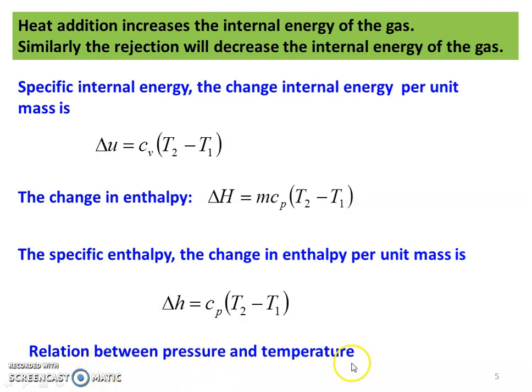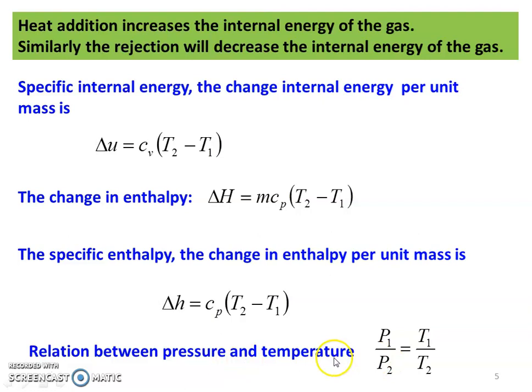The relation between pressure and temperature for the constant volume process: pressure, volume, and temperature are the three basic thermodynamic properties. Since volume is constant, the relationship between pressure and temperature is P1/P2 = T1/T2, or equivalently P2/P1 = T2/T1. We have calculated work done, heat transfer, change in internal energy, change in enthalpy, and the relation between thermodynamic properties.